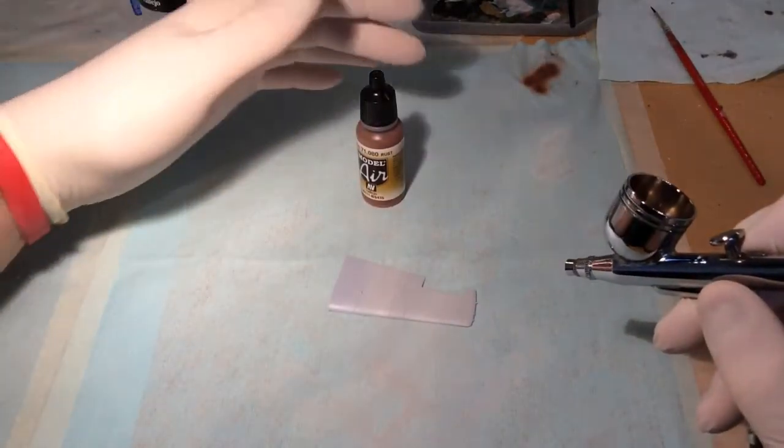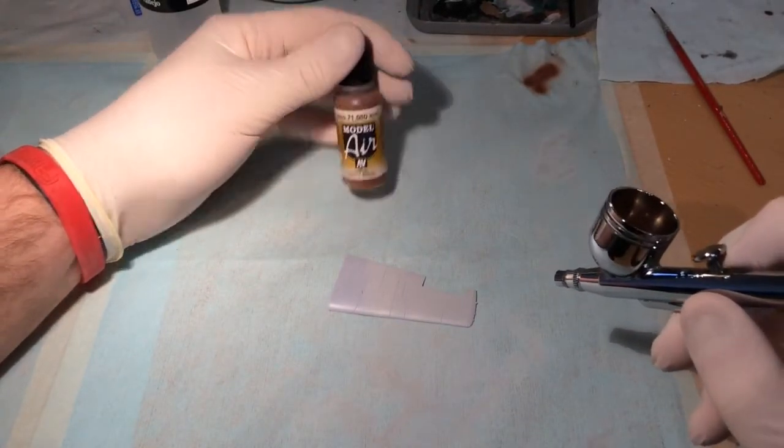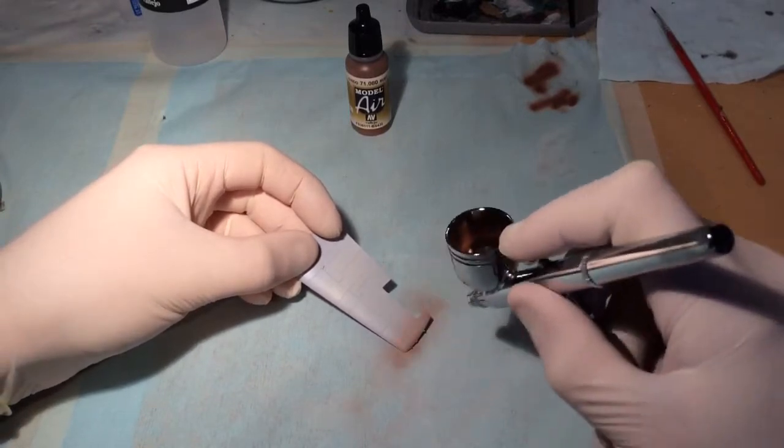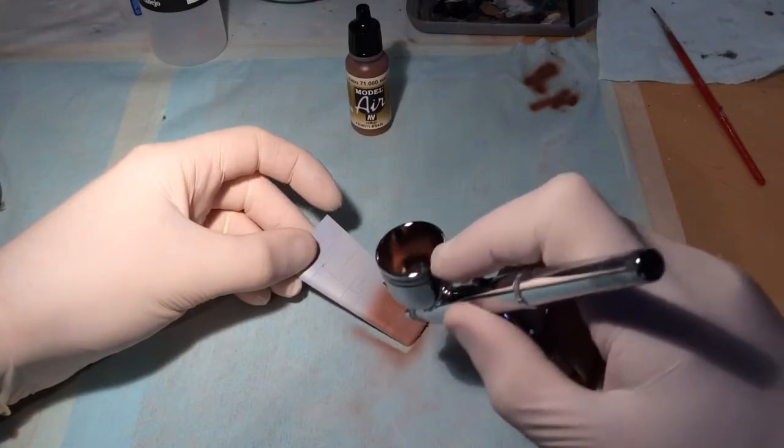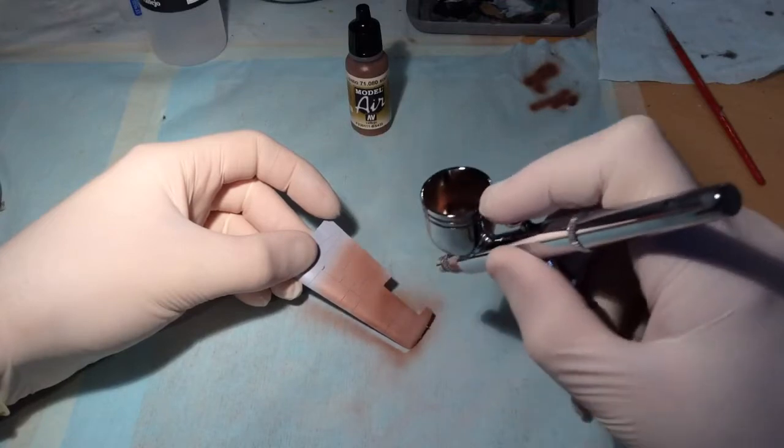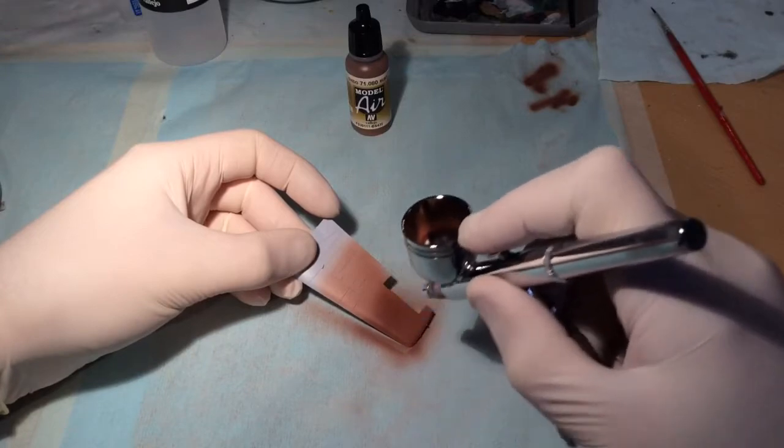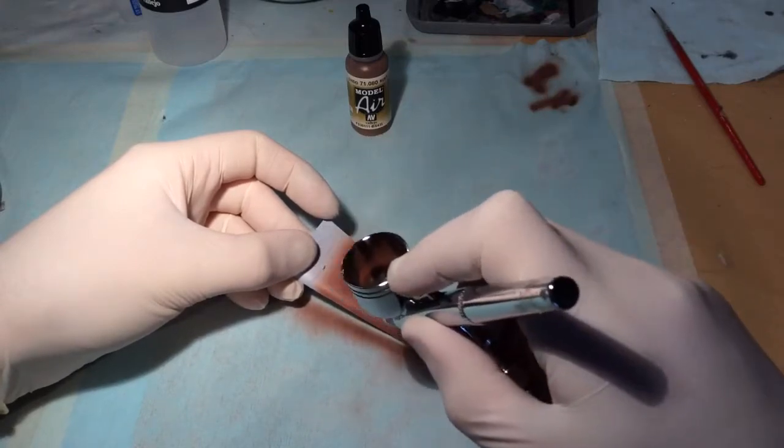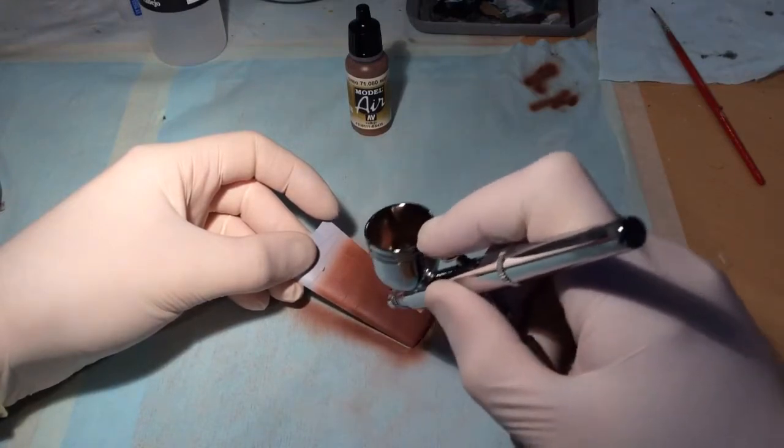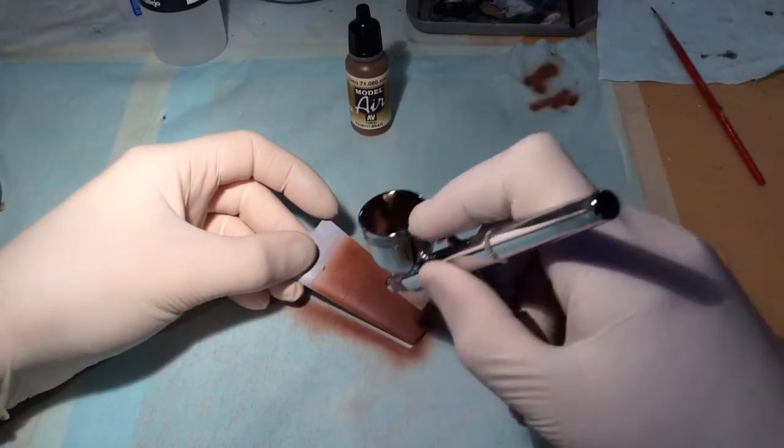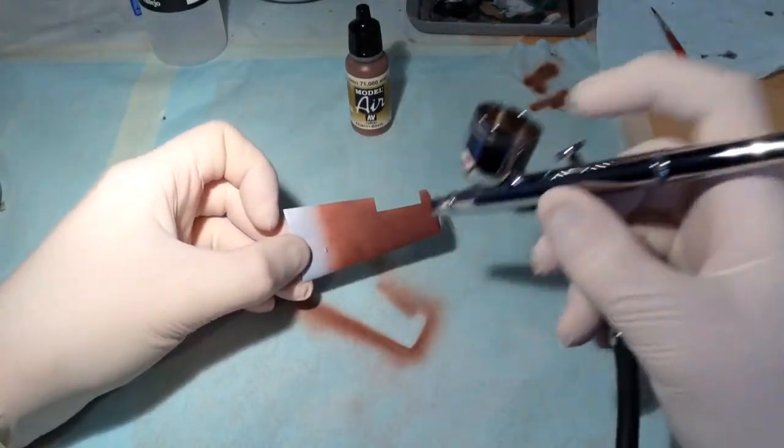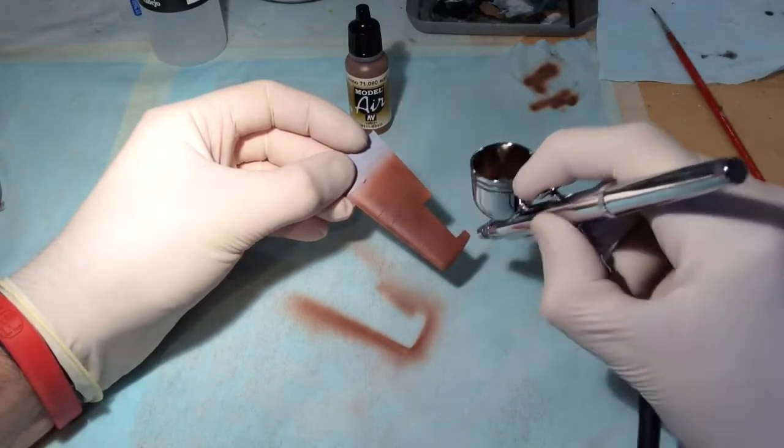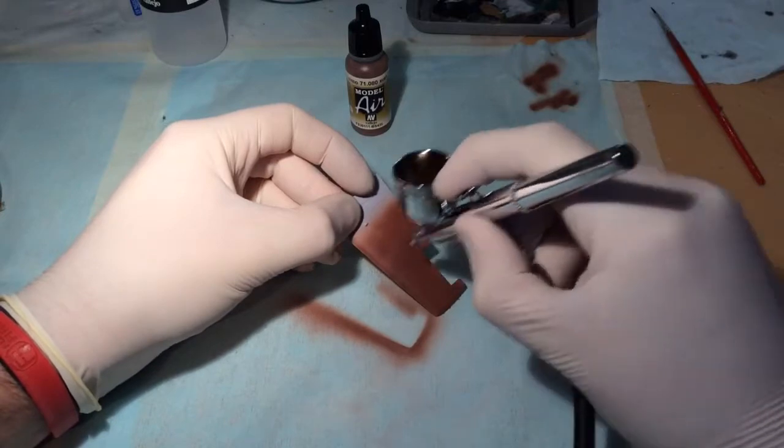The first color I'm going to be applying is Vallejo 71.08 which is rust. I'm going to give that a good coat all over the area I've primed. Remember, build up in small layers, bit by bit. Thin coats are the key. I want a nice solid opaque layer of this paint all over the surface. A good thing with the airbrush, you can blow air out of it to help dry your paint between layers.